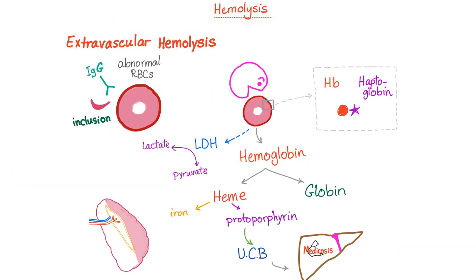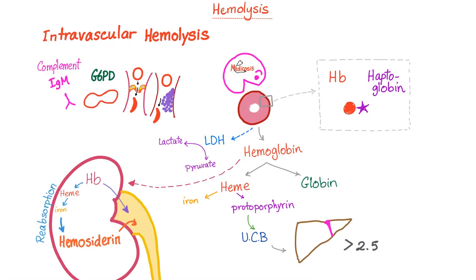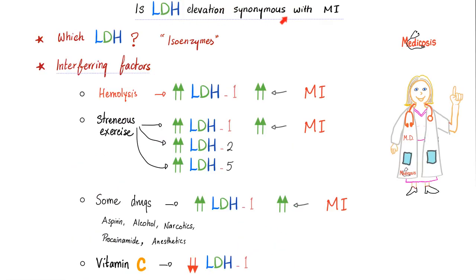Other causes of elevated LDH1: hemolysis. In extravascular hemolysis, splenic macrophages destroy red blood cells, releasing LDH1. Three labs indicate hemolysis: LDH1 elevated, unconjugated bilirubin elevated, and haptoglobin decreased. In intravascular hemolysis, the red blood cell is destroyed inside the vessel, releasing LDH1 — same pattern: LDH1 high, unconjugated bilirubin high, haptoglobin low. So is LDH elevation synonymous with MI? It suggests MI and is sensitive and specific — but which LDH isoenzyme matters.